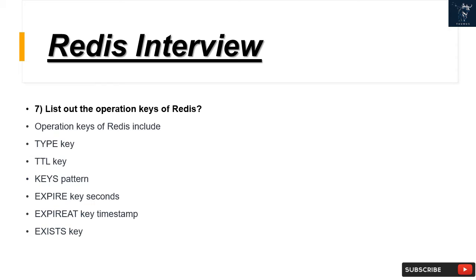Question 7: List the operation keys of Redis. Operation keys of Redis include: TYPE, TTL, KEYS pattern, EXPIRE key seconds, EXPIREAT key timestamp, and EXISTS key.